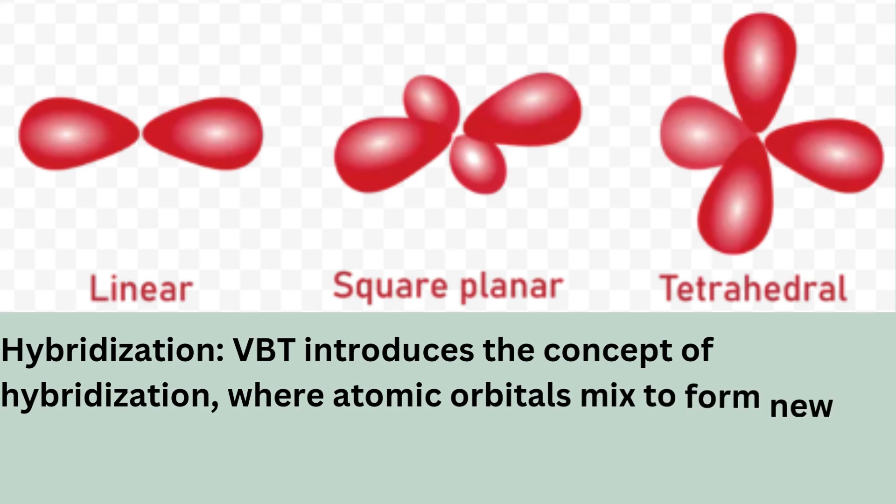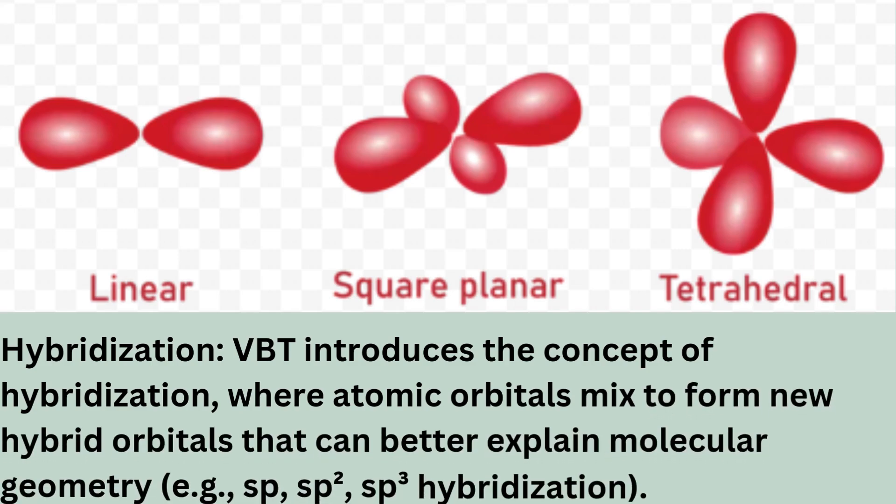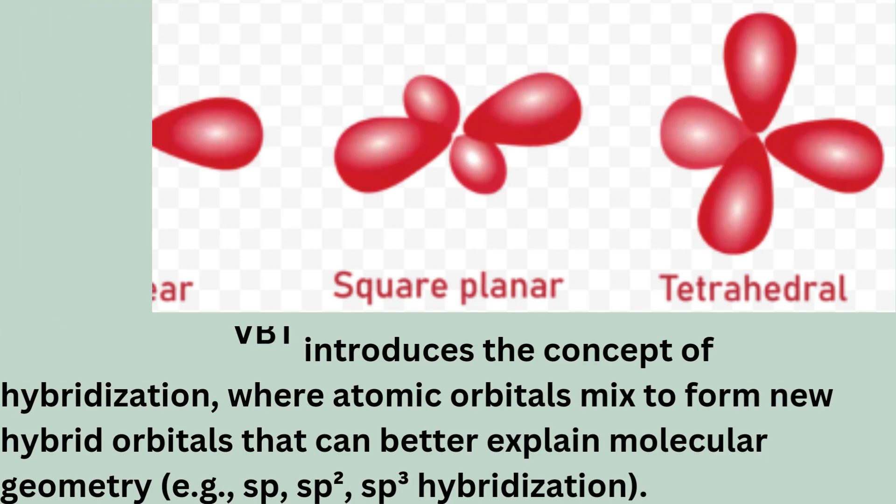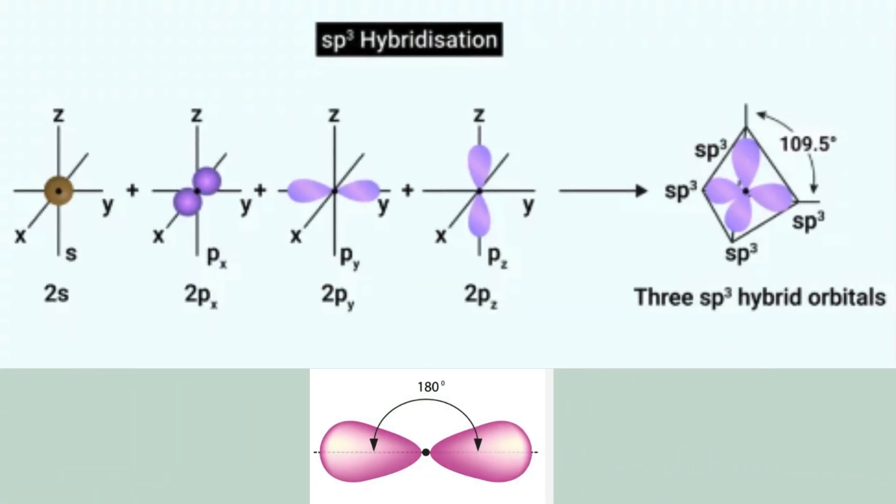Hybridization: VBT introduces the concept of hybridization, where atomic orbitals mix to form new hybrid orbitals that can better explain molecular geometry. For example, sp, sp2, sp3 hybridization.